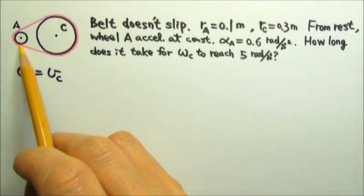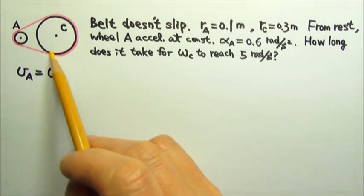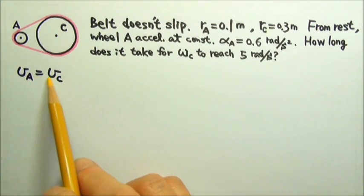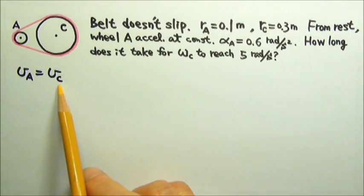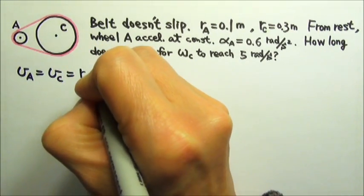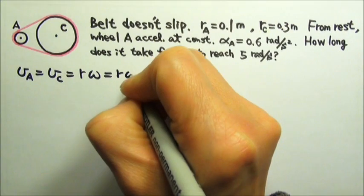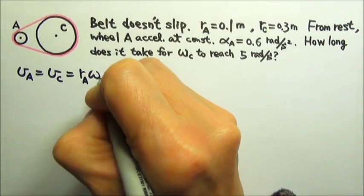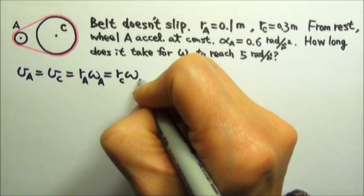For rotation about a fixed axis, we know that the speed equals R times omega. So the speed is R times omega. R times omega of wheel A equals R omega of wheel C.